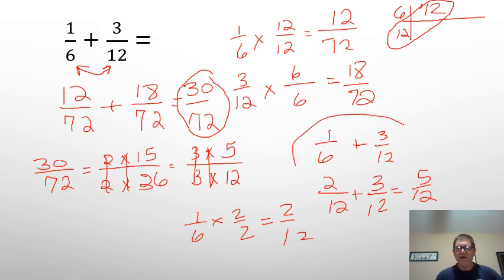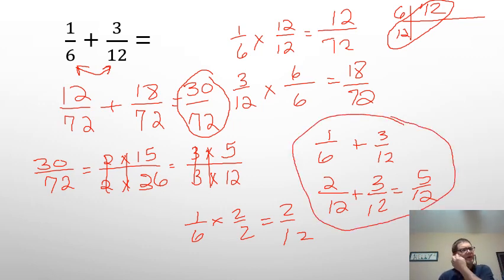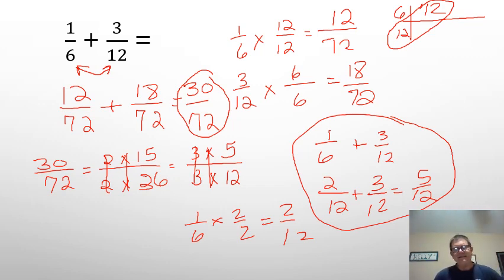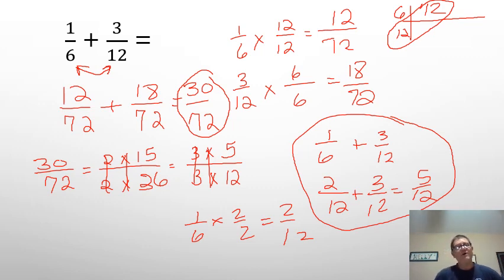Look what we did compared to everything else, just because we found the least common denominator. So that's what we're going to be doing from now on — we're looking for the least common denominator, not the easiest. The easiest is just to multiply the two denominators together and find a common one, but we want to find the least common denominator.